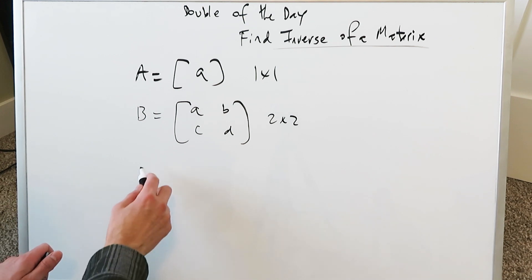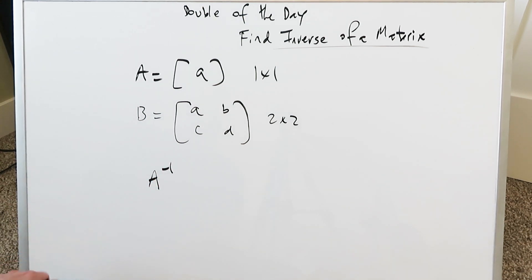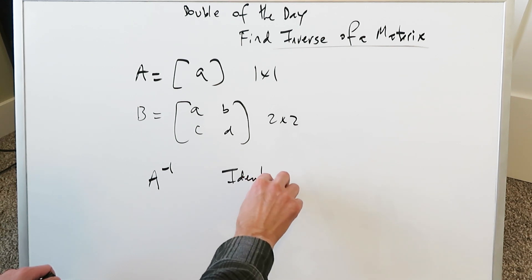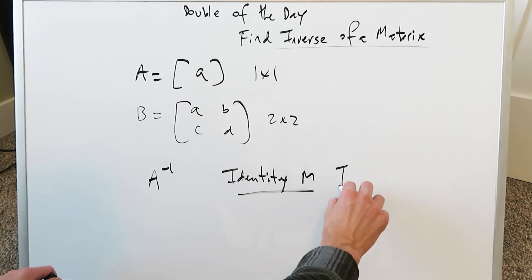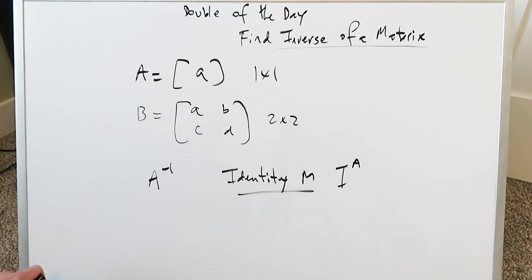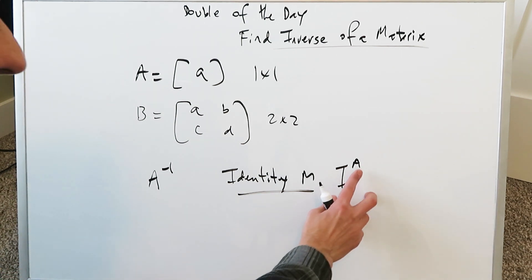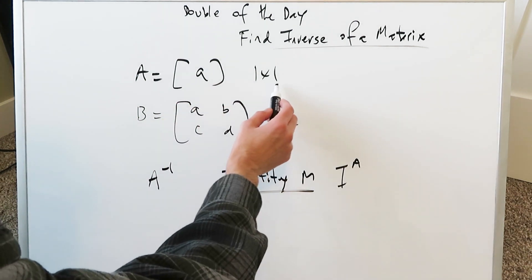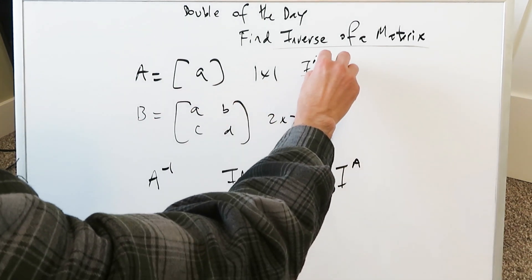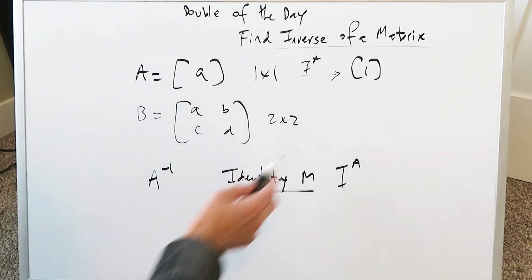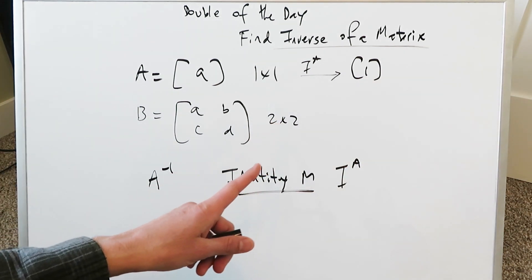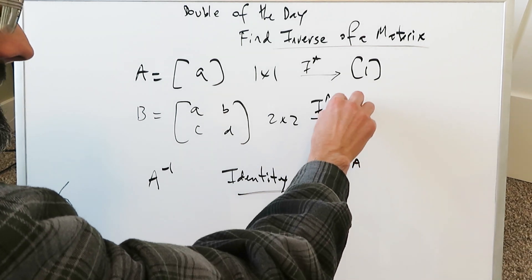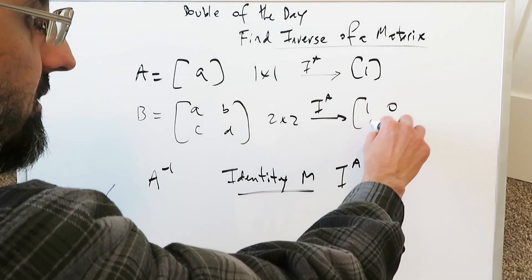Each matrix has an inverse. You designate that inverse with a specific notation. Each matrix also has an identity matrix. You can designate that as I with a superscript A — it's not a real exponent but a superscript. For a one by one matrix, the identity matrix always has a single element of 1. For a two by two matrix, the identity matrix is 1, 0, 0, 1. Many of you have probably seen that.